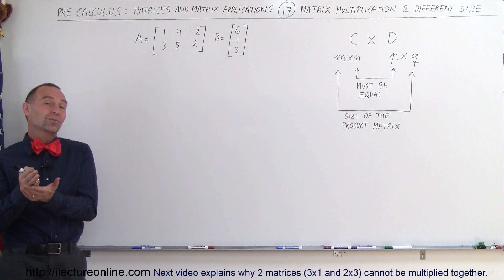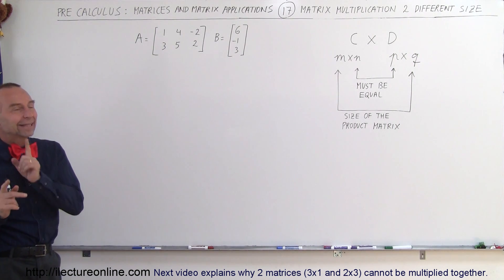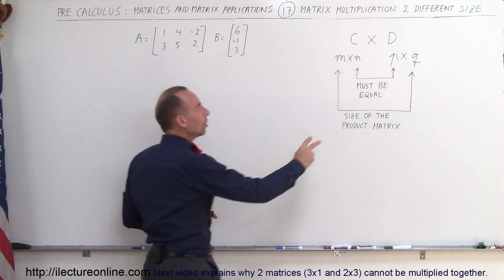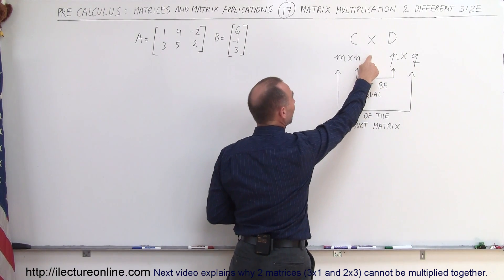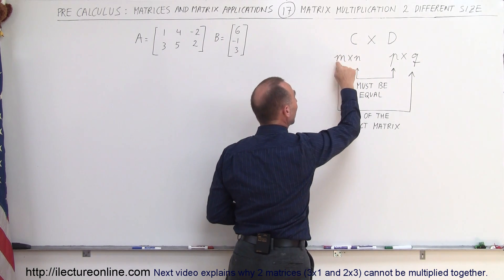And yes, in some circumstances you can multiply them together, in other circumstances you can't. And the key is that these two numbers must be the same. For example, we have two matrices C and D.